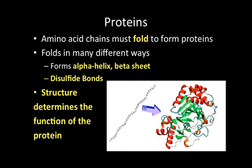Proteins are really long chains of amino acids, and in order to work properly, they must fold to form functional proteins. They can fold in different ways, including an alpha helix (shown in red) and beta sheets (shown in green). This folding happens through disulfide bonds — the protein folds on top of itself, like folding a shirt, with two amino acids coming into contact and bonding. The structure determines the function: the amino acid sequence and the shape determine whether the protein acts as an enzyme or serves a structural purpose.